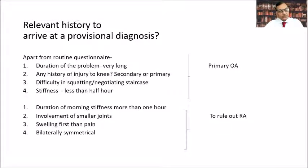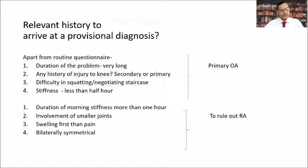We must rule out rheumatoid arthritis. To rule it out, ask for the duration of morning stiffness — in rheumatoid arthritis it usually lasts more than one hour. In rheumatoid arthritis there is involvement of the smaller joints, and swelling usually comes before pain, and it is usually bilaterally symmetrical.